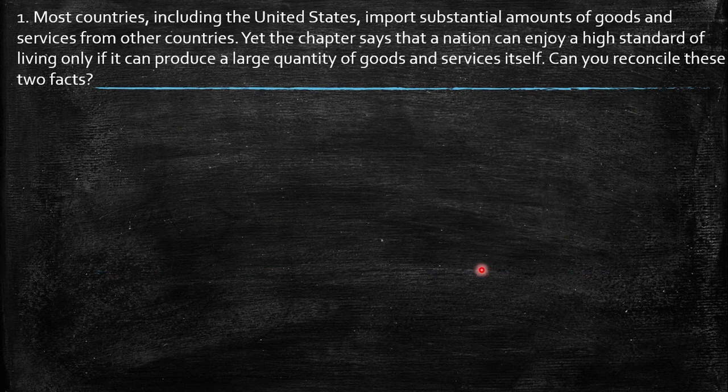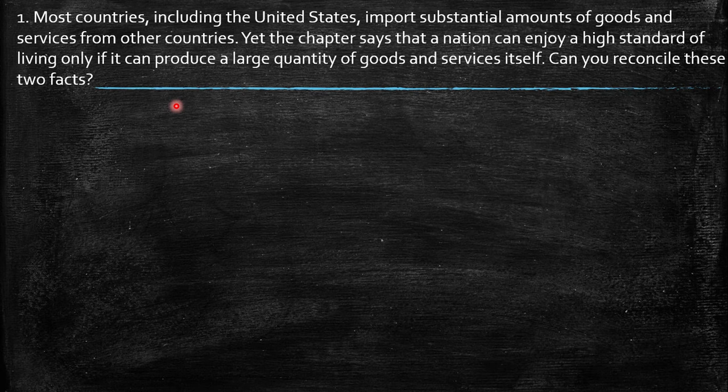The first question says: most countries, including the United States, import substantial amounts of goods and services from other countries. Yet, the chapter says that a nation can enjoy a high standard of living only if it can produce a large quantity of goods and services itself.